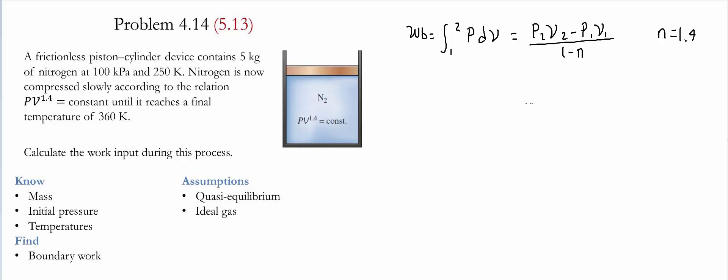Notice that in this particular case we do not have the value of the specific volumes at either one of the states. So what we're going to use is the fact that nitrogen is an ideal gas, and we're going to use the ideal gas law that relates pressure and specific volume with the temperature and the gas constant for nitrogen.